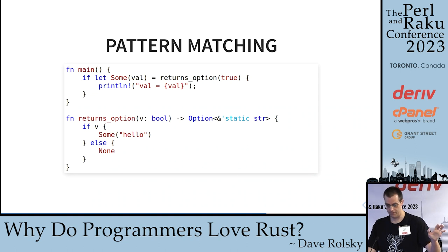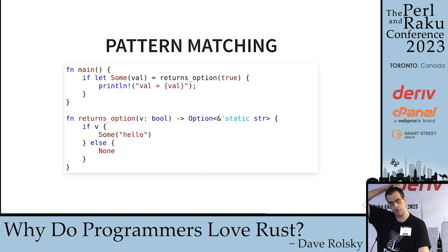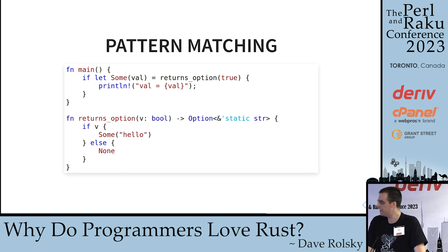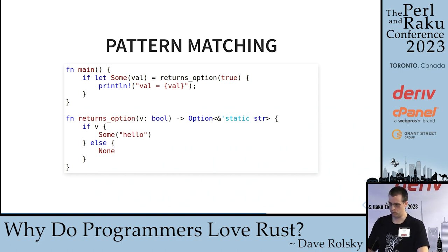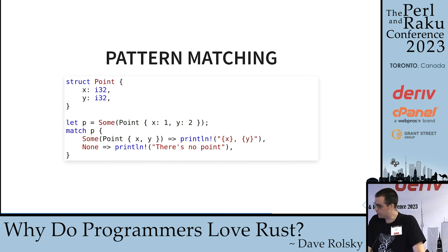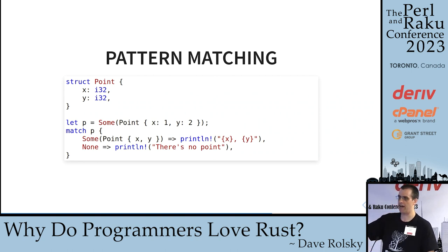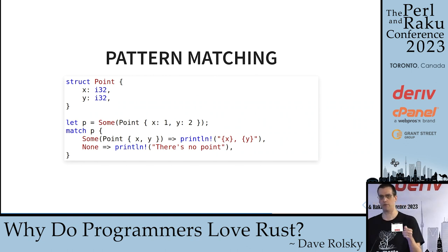There are other types of pattern matching we can do. One example: you can do 'if let' and then an enum variant equals something. In this case we have something that returns an Option, and we say if we got Some, we print it; otherwise if we got None, we just ignore it. You can do this with any type of enum, not just options and results — even enums you create. You can also destructure structs. In this case we have a Point with X and Y, and in our pattern matching we actually assign the X and Y fields to variables created in the match, and then print them.